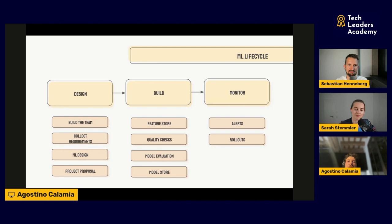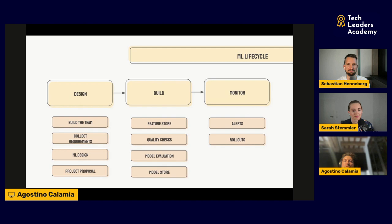The last part of the build phase is a model store — a place where you store all artifacts involved in your model development: your trained model, training data, evaluation data, evaluation results, and maybe a Dockerfile to reproduce the environment. If you want to do a second or third iteration, you can compare to previous iterations, understand what was done before, and this reproducibility helps you improve upon the past.